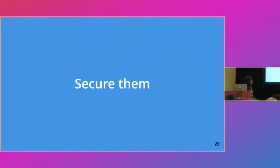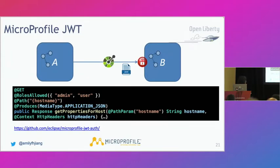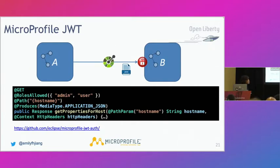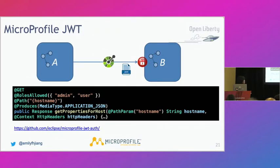Next is securing microservices. For example, on a getPropertiesForHost operation, you want to secure it using Jakarta Security with @RolesAllowed, which means only admin or user roles can access that operation. When service A calls into service B, it passes a JWT token. MicroProfile JWT adds claims: UPN for the user and groups to identify group membership. Service B receives the token and can determine which group you belong to — if you belong to 'admin', you can access the backend.